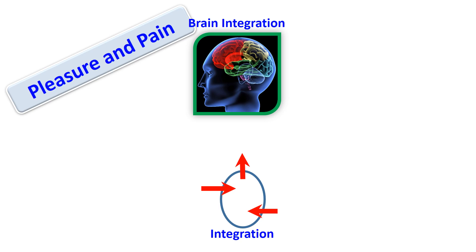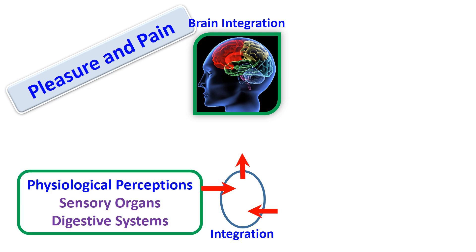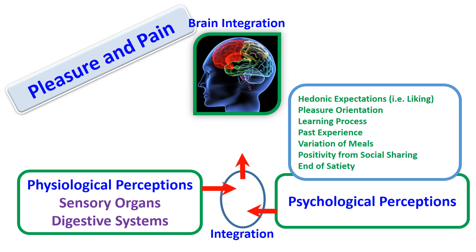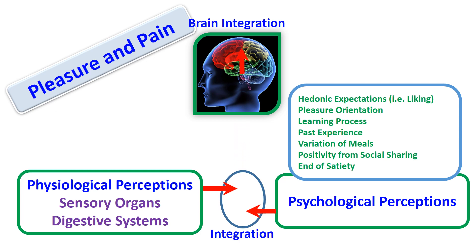Pleasure perception is not as simple as we think. It is an interaction achieved from physiological and psychological perception as integrated in the brain. It has physiological perceptions from sensory organs as well as other organs such as the digestive system. The psychological components also include hedonic expectations. All components are integrated into a reward system in the brain. Attaining pleasure is very important either by sensory excitement, emotional excitement, or well-being.